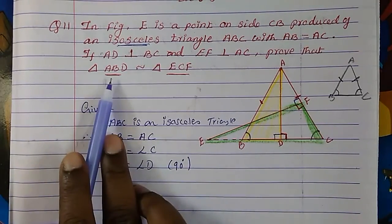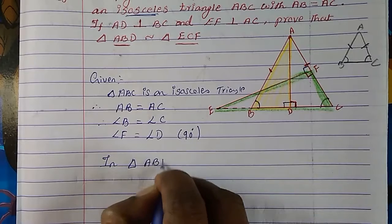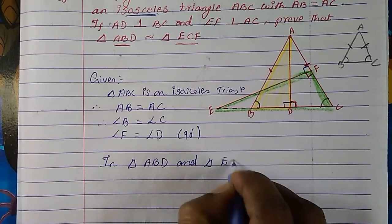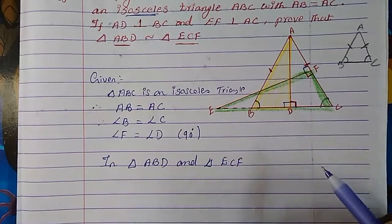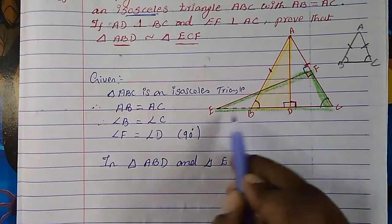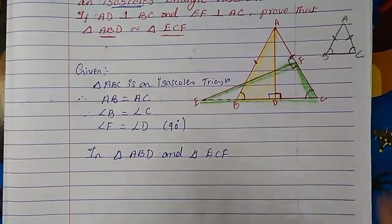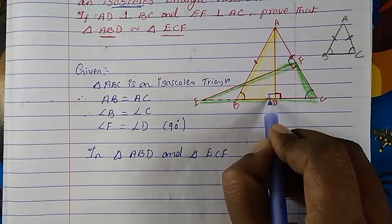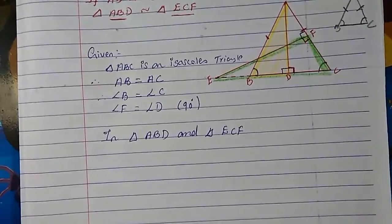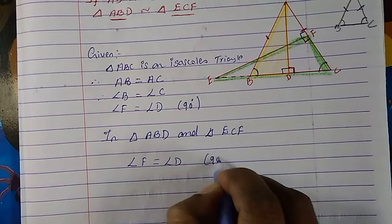So now let's prove that triangle ABD is similar to triangle ECF. In triangle ABD and triangle ECF, we look at the green color and yellow color triangles. In the green color triangle, we have a 90 degree angle. In the yellow color triangle, we also have a 90 degree angle. So angle F is equal to angle D, because both are 90 degrees.